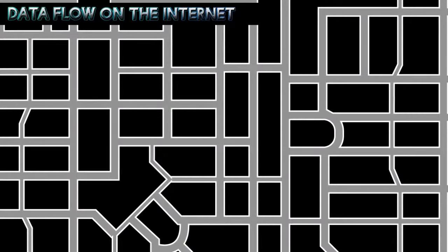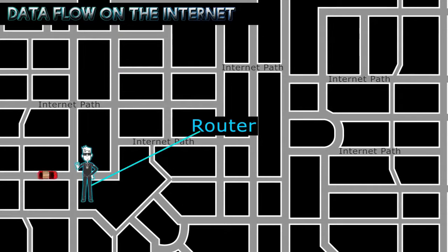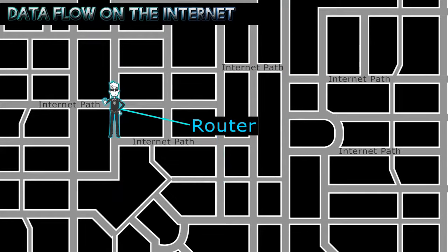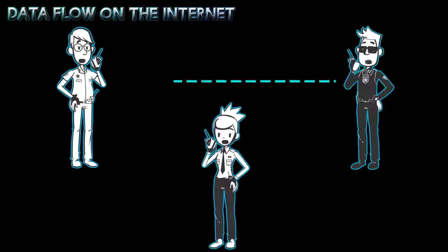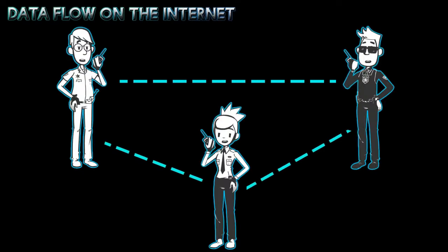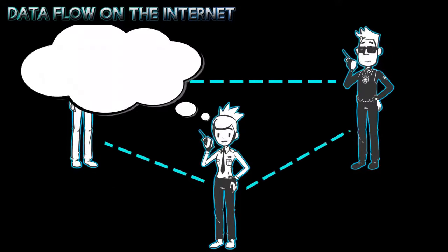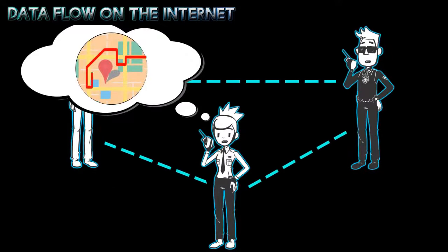The Internet is a series of many interconnecting networks. To help manage traffic on your local roads, a traffic cop directs and monitors traffic. The Internet uses a router as its traffic cop. The router determines the best path for the data packets depending on the speed and number of other traveling data packets. Internet routers regularly communicate with each other so they know what routes provide the fastest delivery. These routes are stored inside the router's memory and are called routing tables.